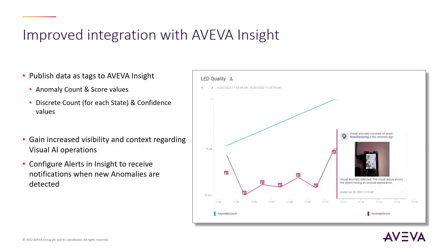Looking at what's new in Vision AI Assistant 2021 R2, the first key area of improvement is integration with Aviva Insight. The new release can publish data as tags to Aviva Insight, including anomaly count and anomaly score values for an anomaly detection skill, as well as a discrete count for each state of a discrete skill and confidence values. These tags, available within Aviva Insight, provide increased visibility and more context regarding the process on which Vision AI is operating.